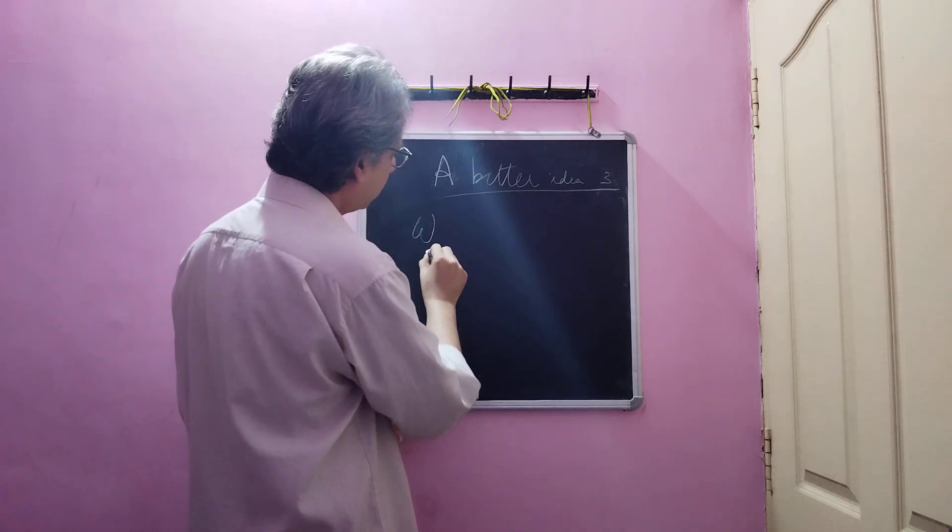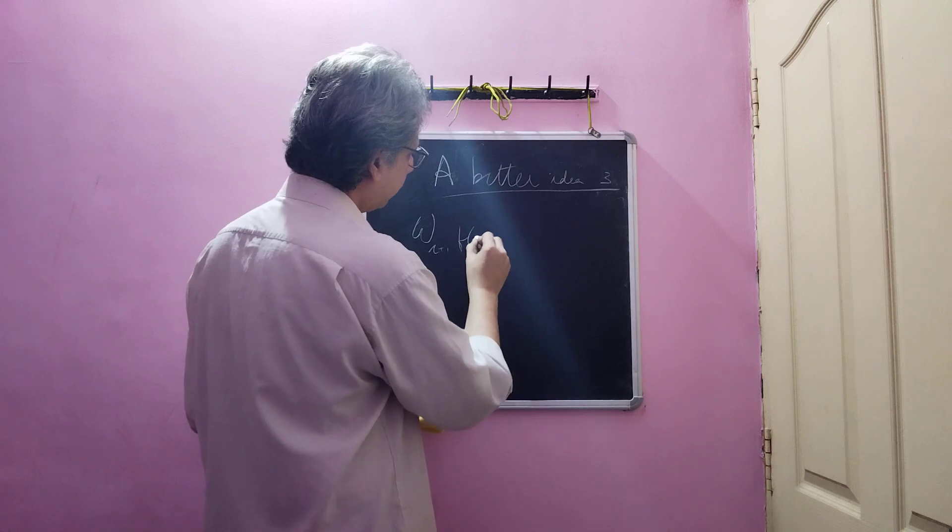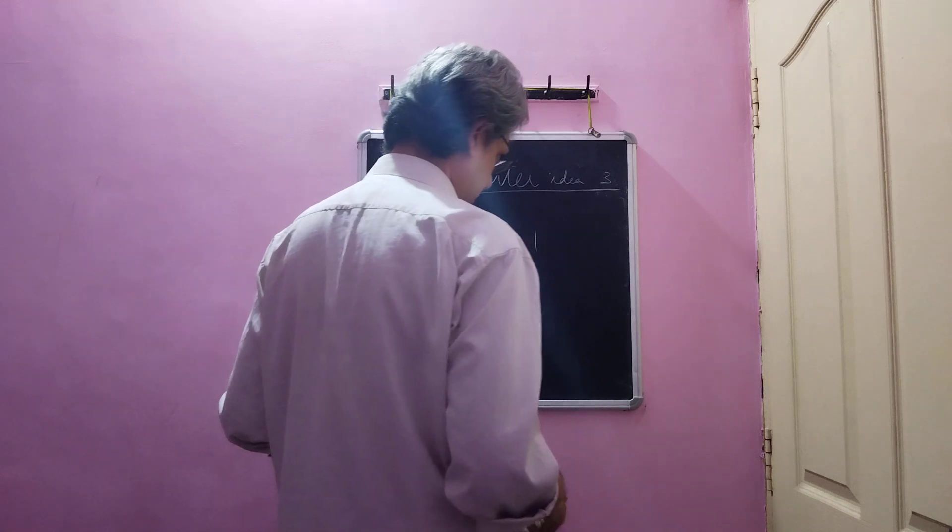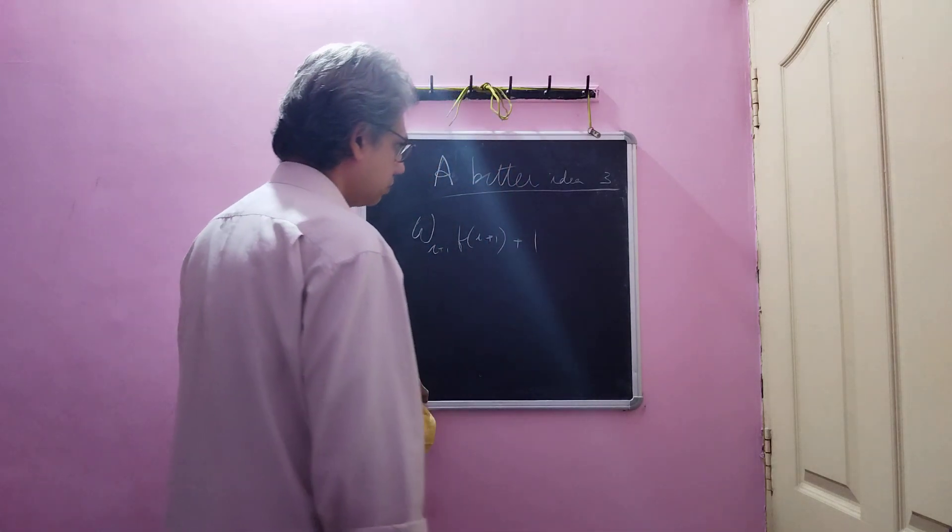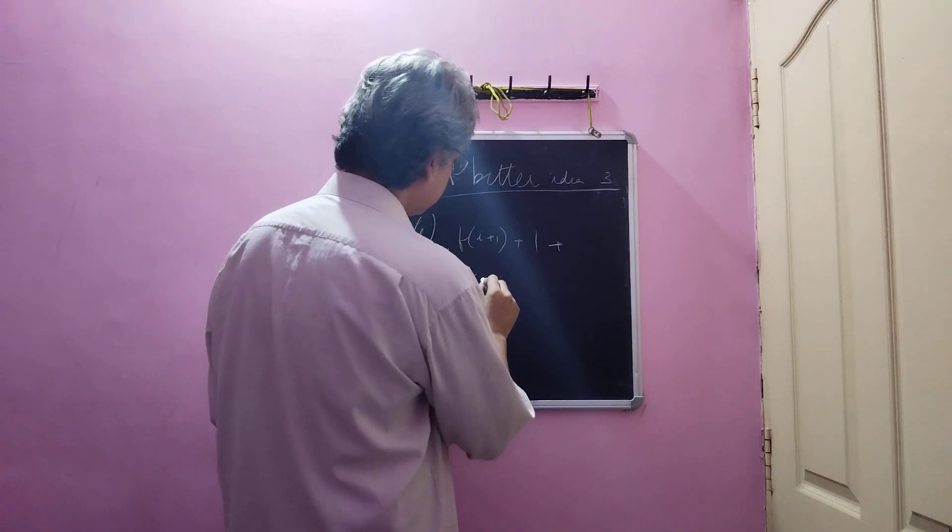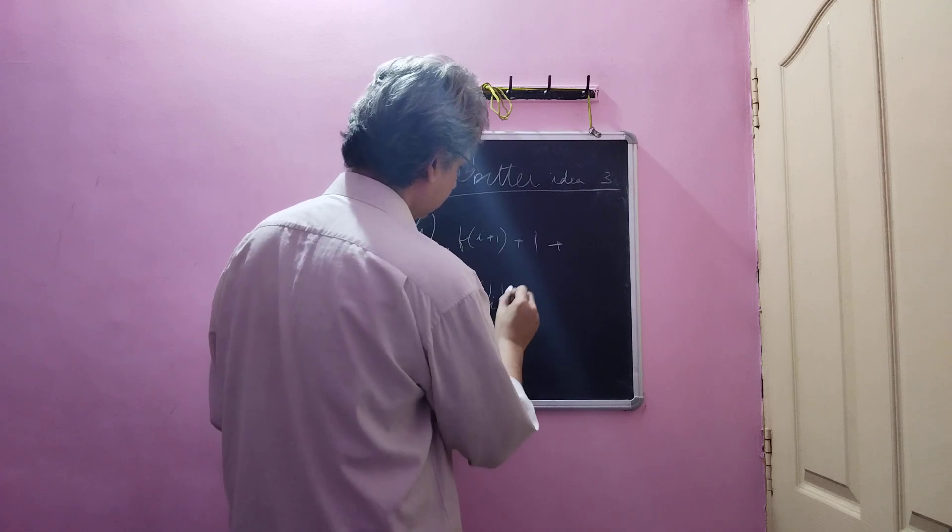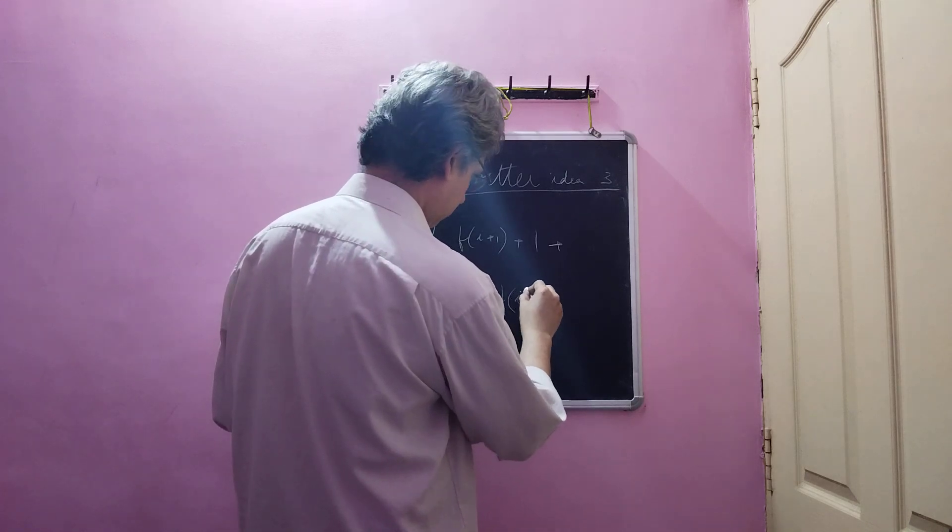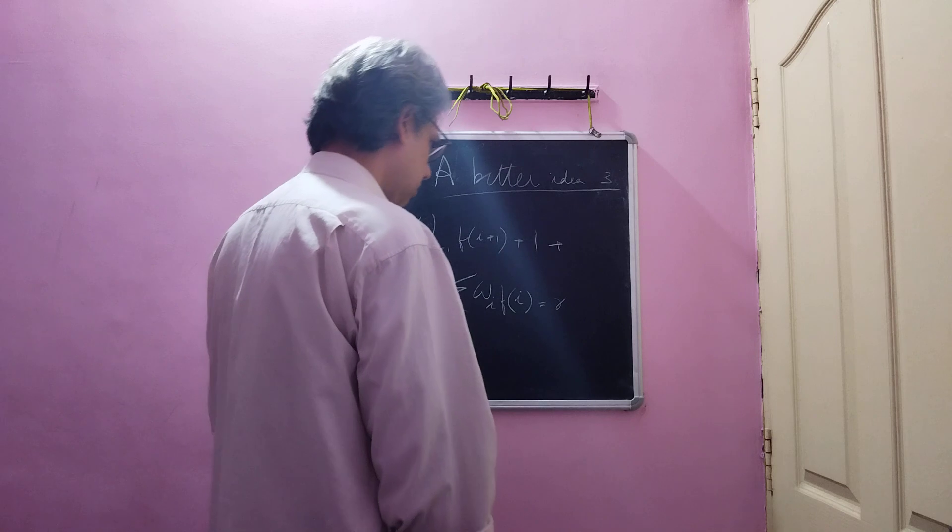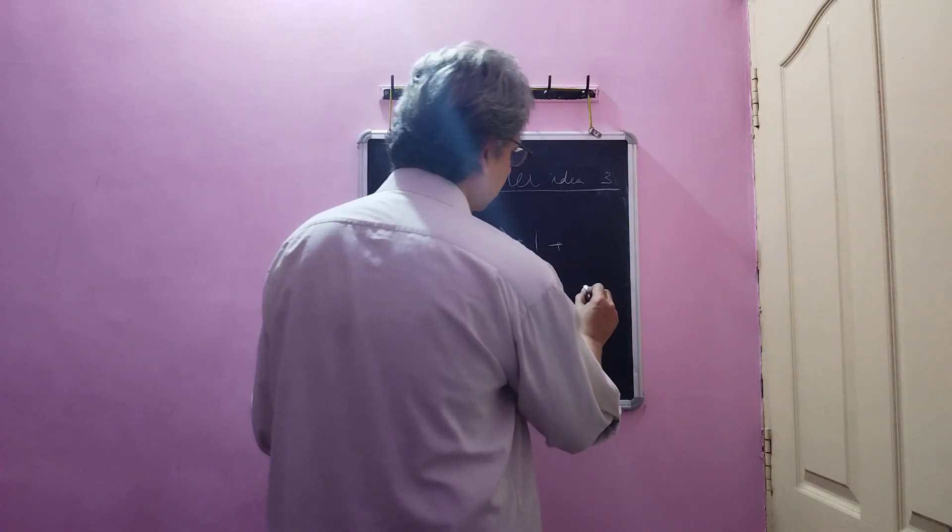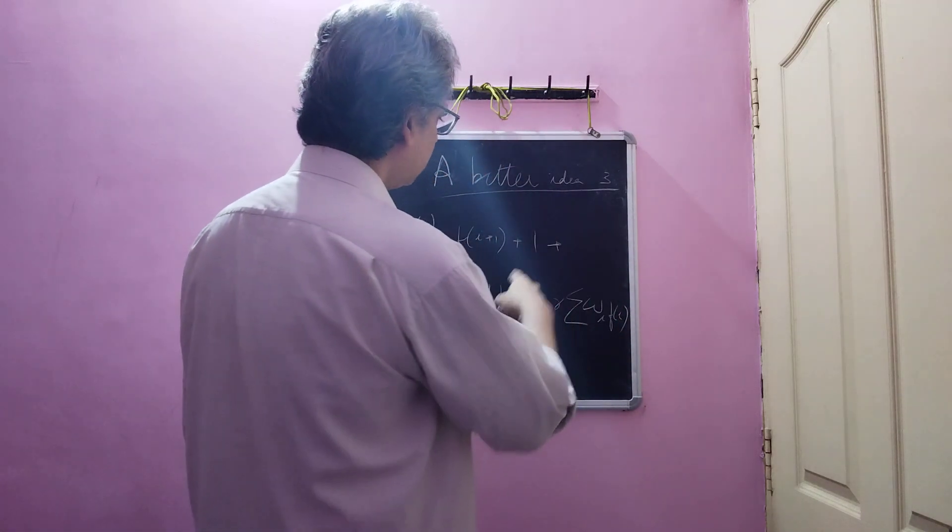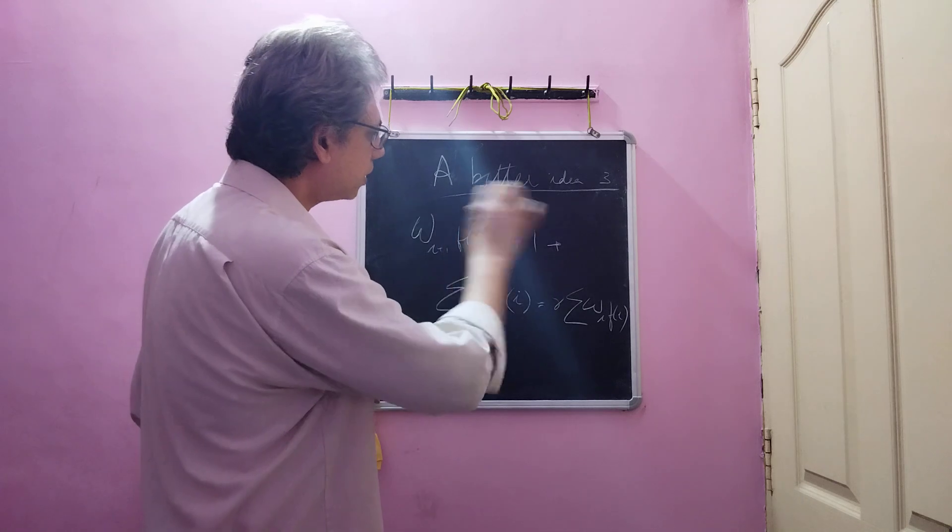So what we have to do, in other words, we require wi plus 1 times f of i plus 1 plus 1 plus summation wi times f of i must be equal to i. So r times r times summation wi times f of i. This condition must be satisfied in order for it to code it up to s only.